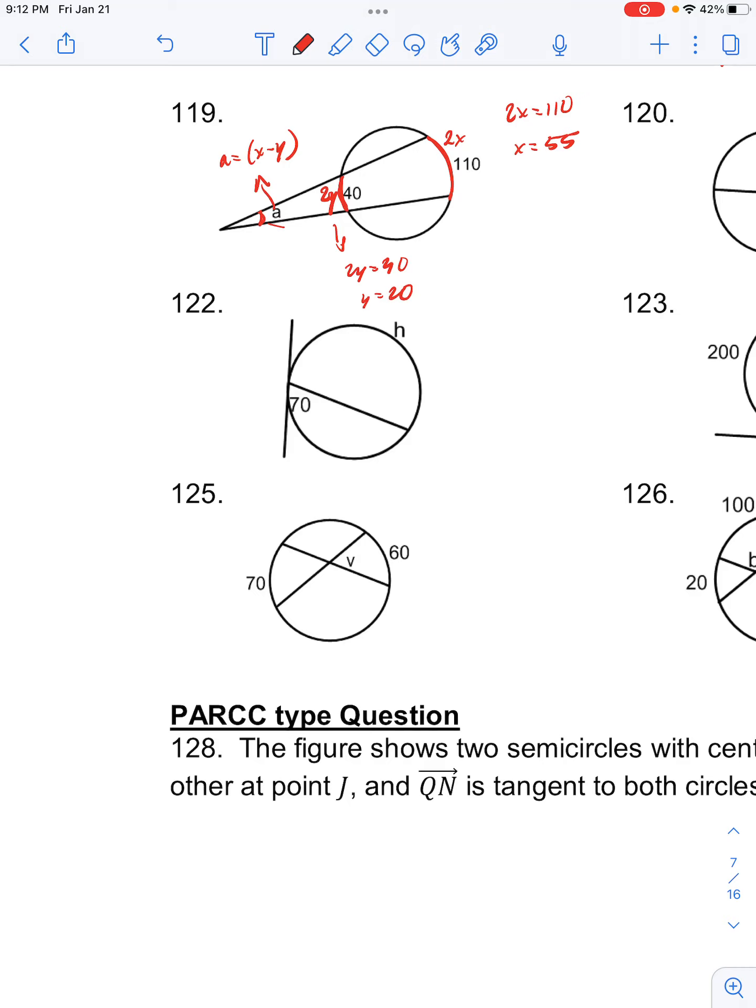So then plugging in for A, we have x, which is 55, minus y, which is 20. So A would be 55 minus 20, which is 35 degrees. Thank you.